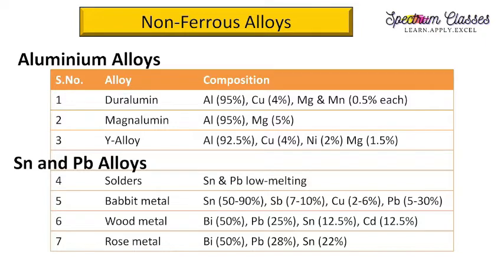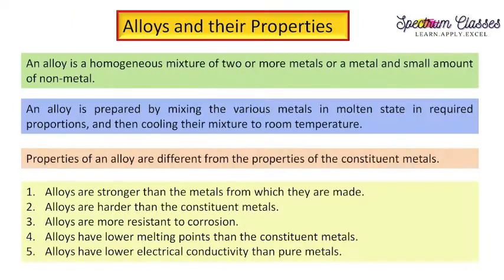An alloy is a homogeneous mixture of two or more metals, or a metal and a small amount of non-metal, as in the case of steel. An alloy is prepared by mixing the various metals in molten state in the required proportion and then cooling them to room temperature. If we are having metal and non-metal, we first melt the metal, add some amount of non-metal, and cool the mixture to room temperature.